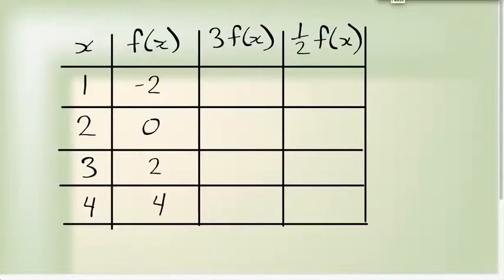So if I want to look at those stretches from points, here's a set of points. I got the x value and my y value. Remember, these are all y values. Now if my original function had points at (1,-2), (2,0), (3,2), (4,4), what happens when I apply these transformations?